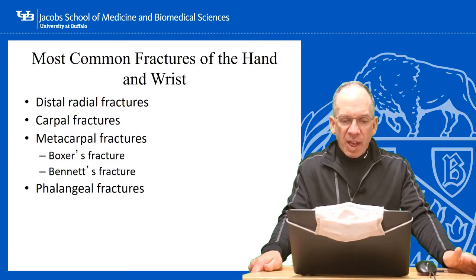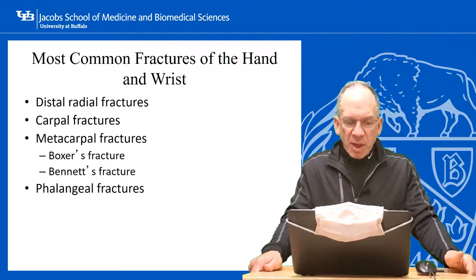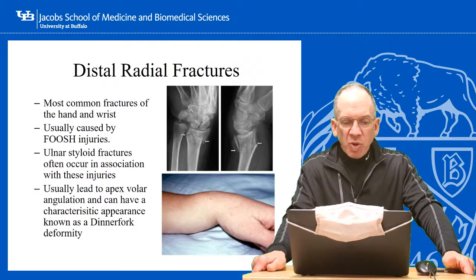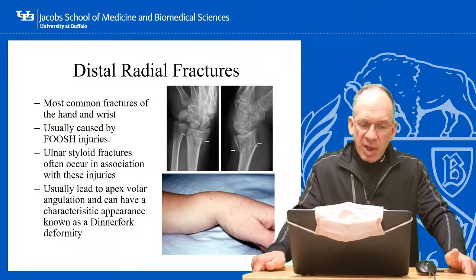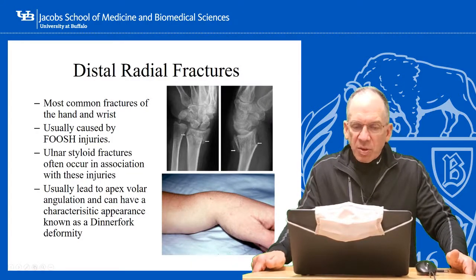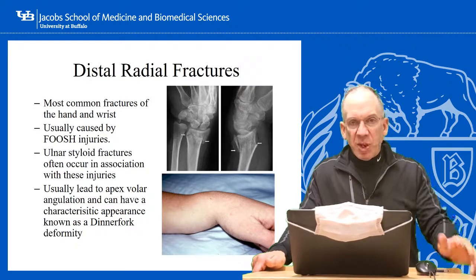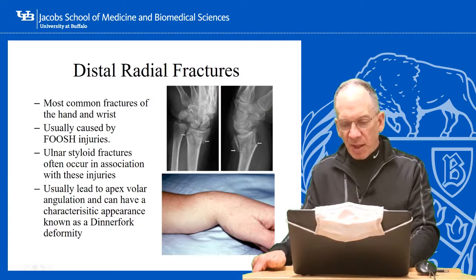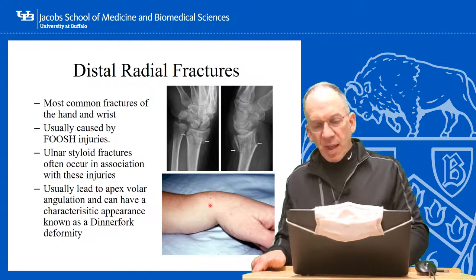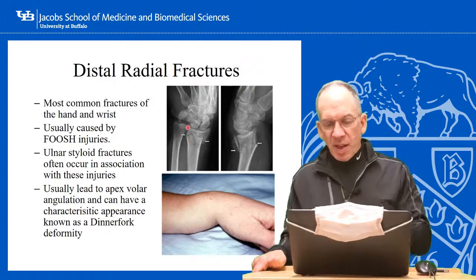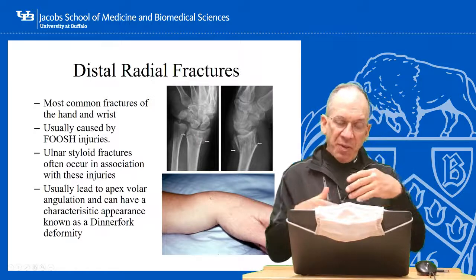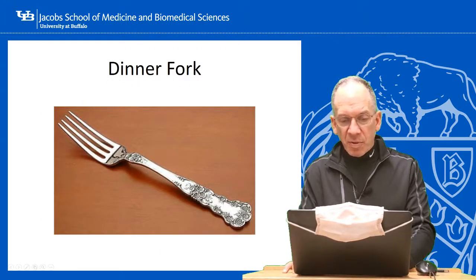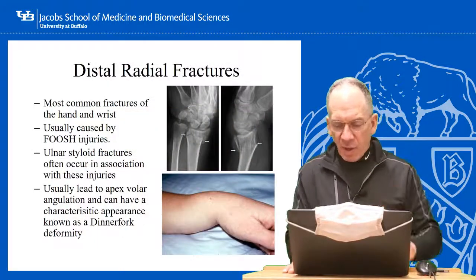A few other common fractures of the hand and wrist: distal radius fractures are the most common fracture of the hand and wrist, usually caused by a FOOSH — fall on an outstretched hand. They usually occur along with an ulnar styloid fracture. Because people fall on their hand apex volar, it causes what's known as a dinner fork deformity if not reduced. Treatment depends on the age of the patient and degree of deformity. In patients under 40, reducing the fracture is much more likely to stay in place; past 40 or 50, the fracture is more likely to settle due to poorer bone quality.